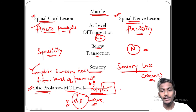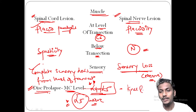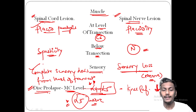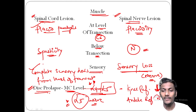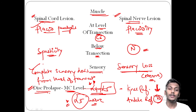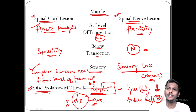In L4-L5 disc prolapse, as L4 innervates the knee, the knee reflexes would be diminished or absent (areflexia), whereas the ankle reflexes — innervated by sacral nerves — would be completely normal. This again illustrates that in disc prolapse, there is loss only at the level of the lesion, with everything normal below it.